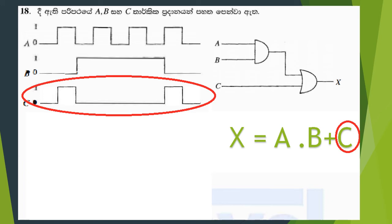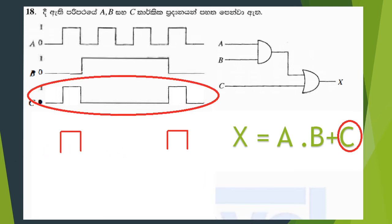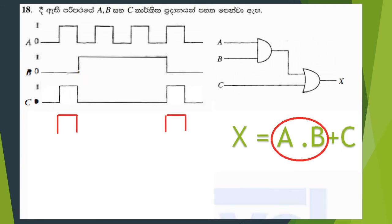C is approximately A dot B, where the value is 0. The first step is to add C to 1. Now we add A dot B to A dot B.